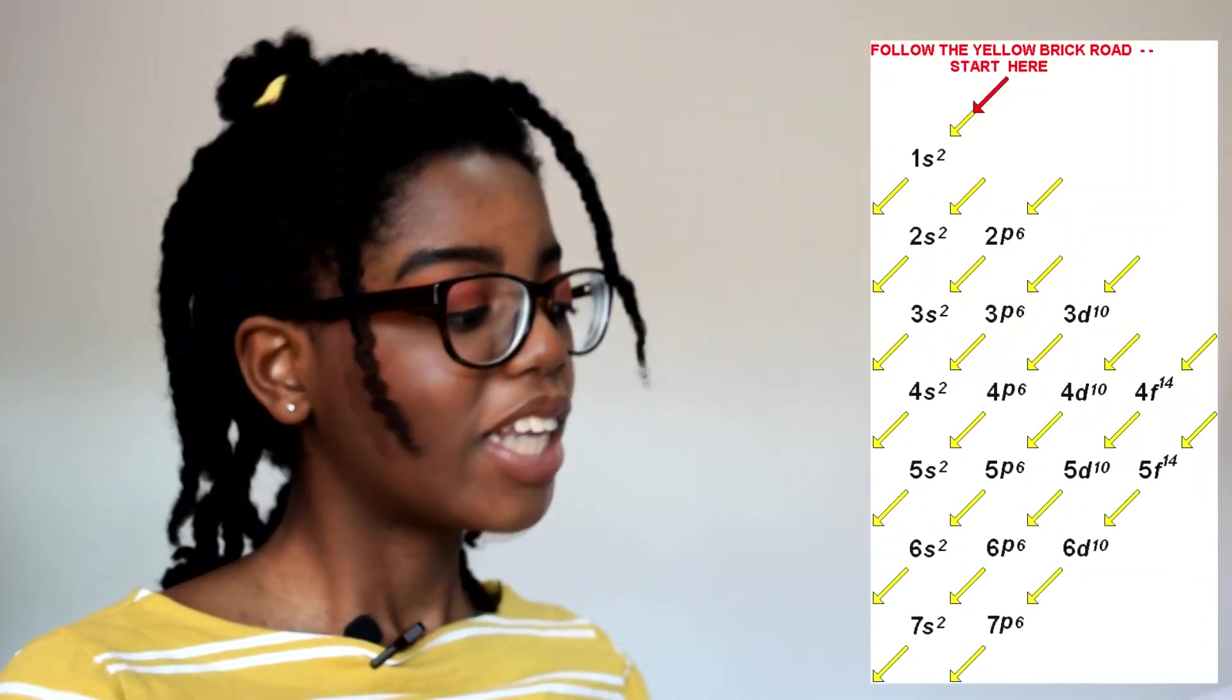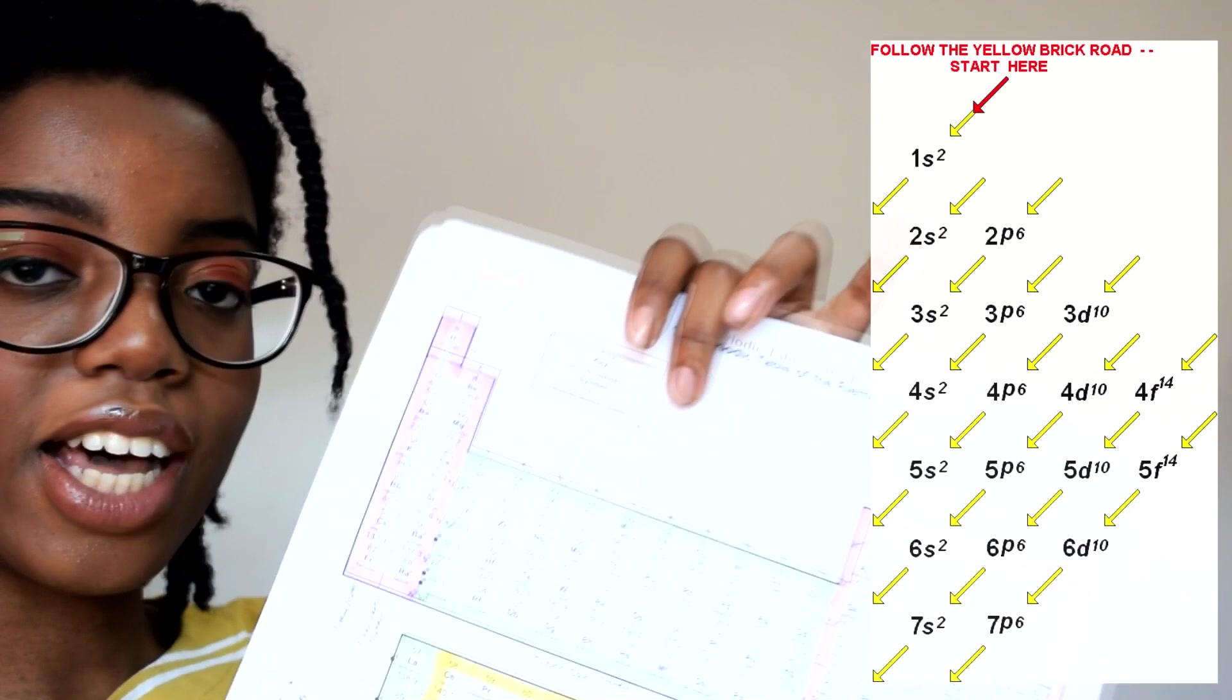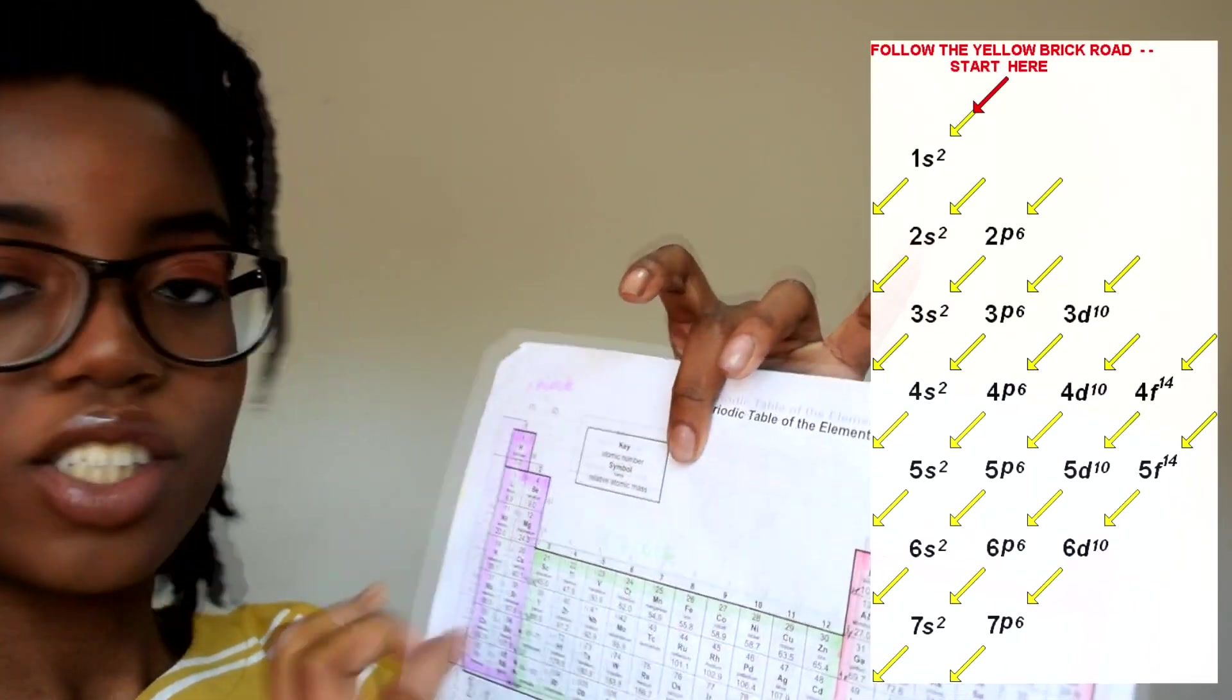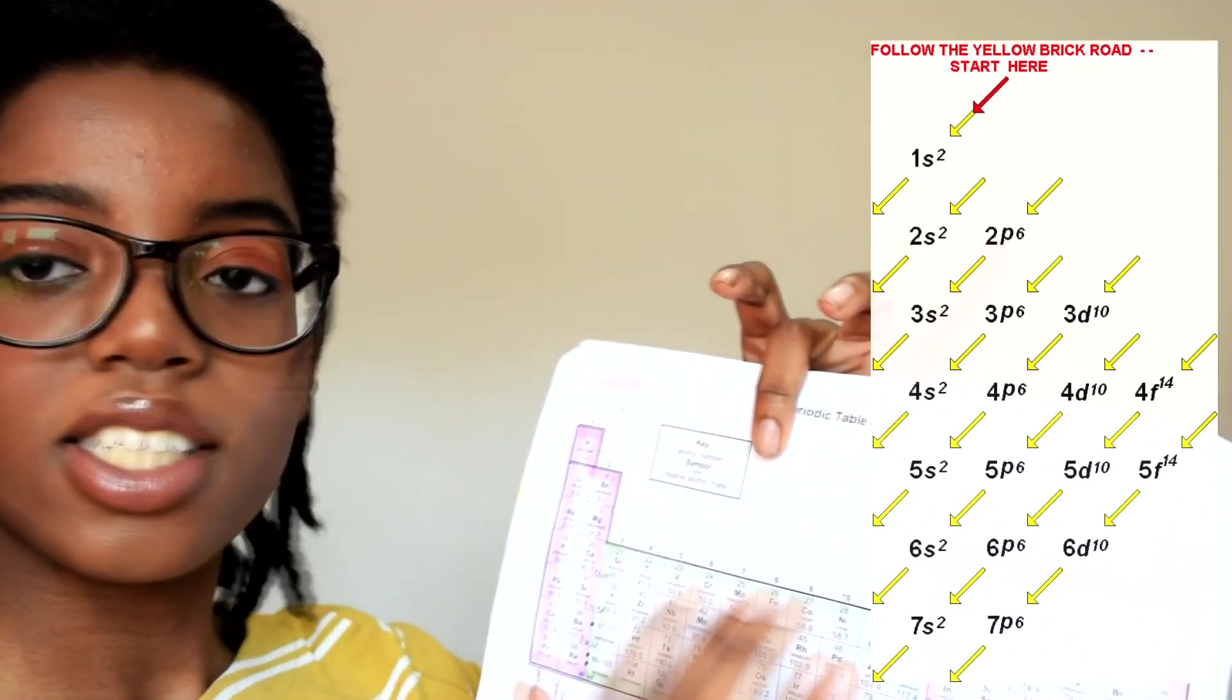Say iron. It has 26 electrons and is in the D block. To do this you would go through the electrons until you'd get to that.